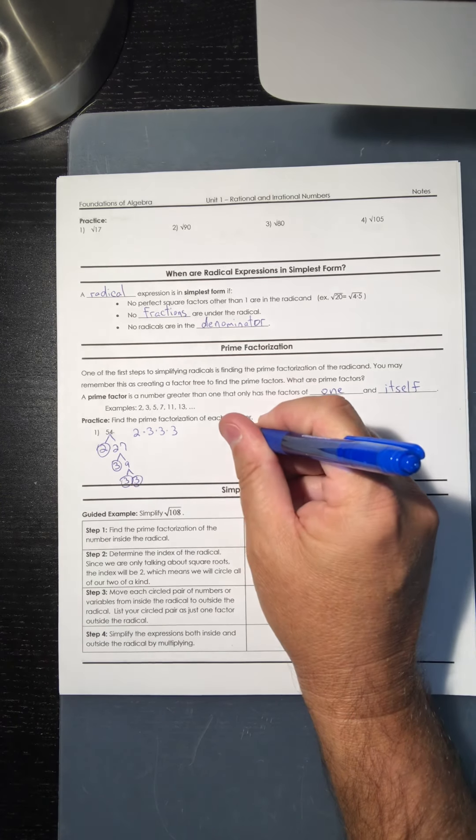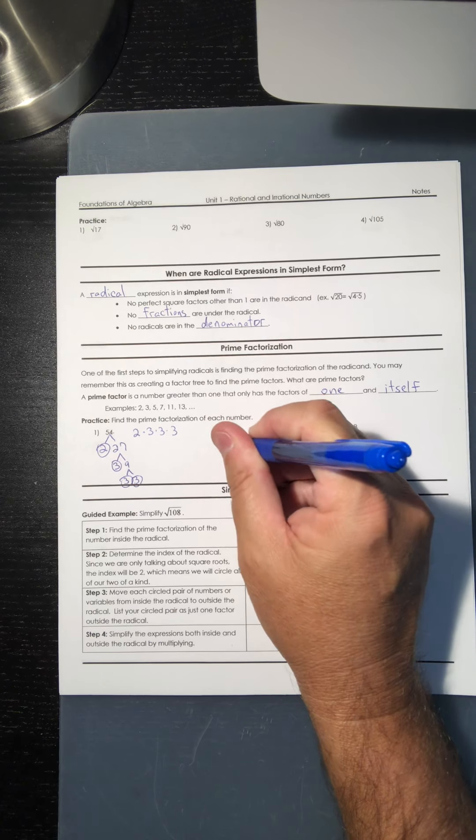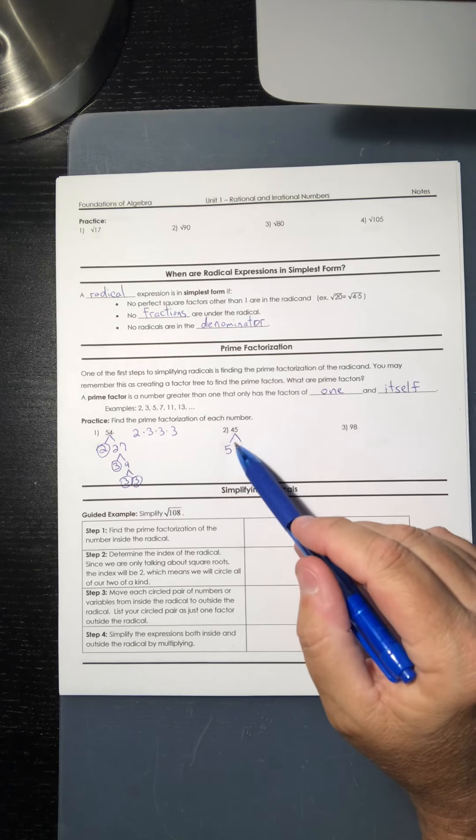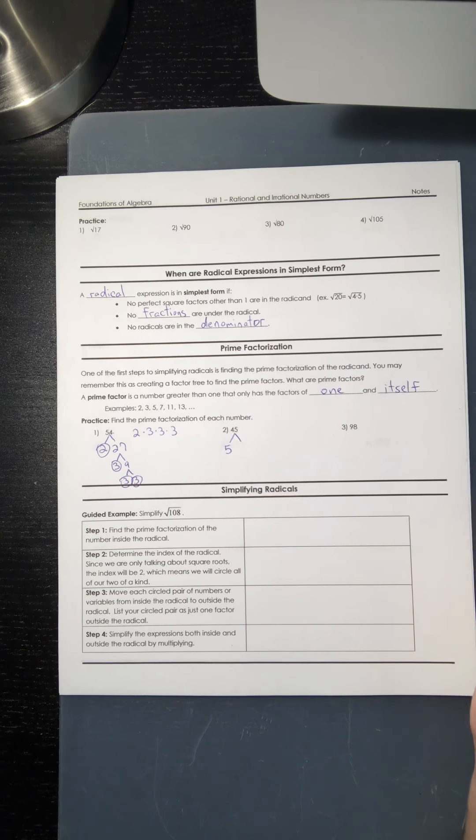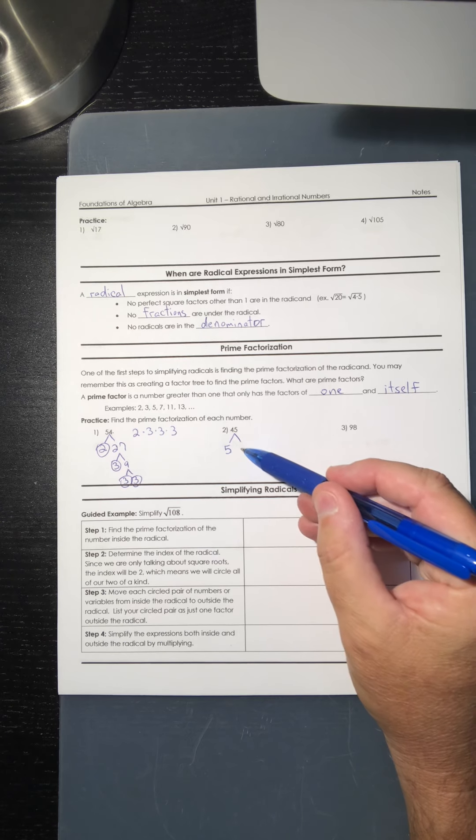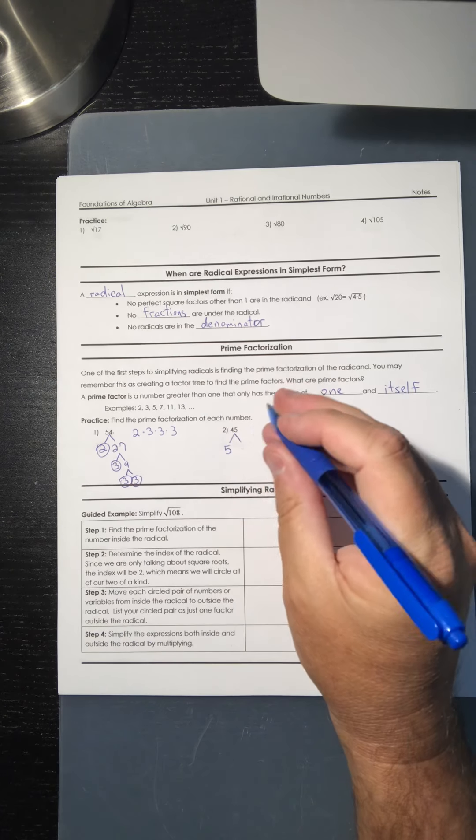So let's do the next one, 45. Well, 45 ends in 5, so I know 5 goes into it. And again, if you want to figure out how many times 5 goes into 45, well then get a calculator. Your phone will work. Do 45 divided by 5, and that number is going to be 9.